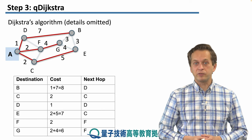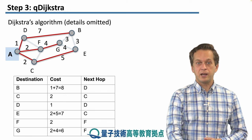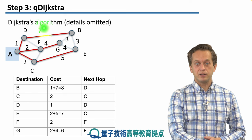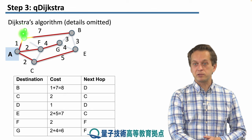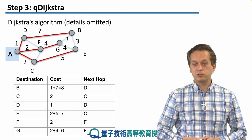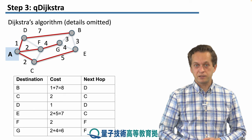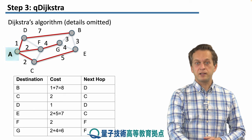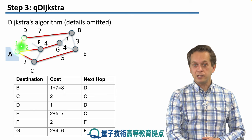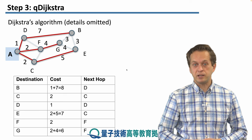Here we have an example of our simple network, and this is the routing table associated with node A. Node A runs the usual classical Dijkstra's algorithm, and it finds the following link costs to its neighbors and path costs to its destinations.